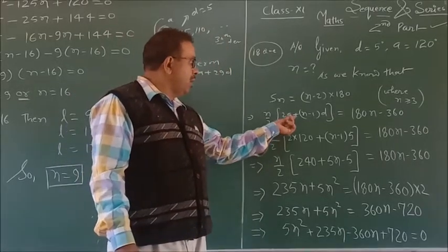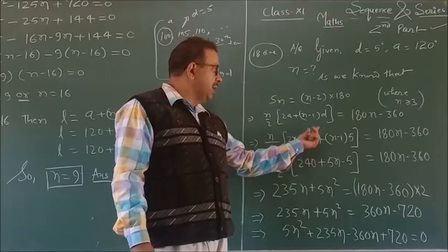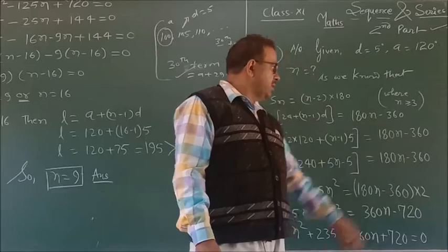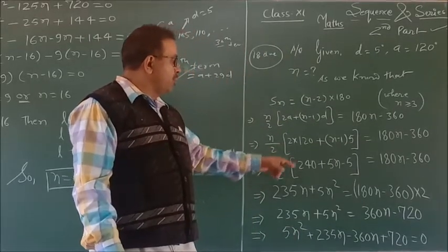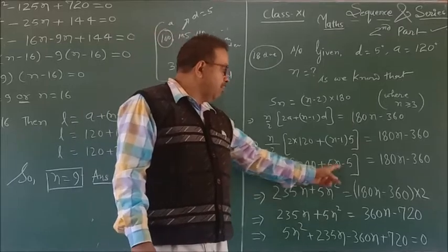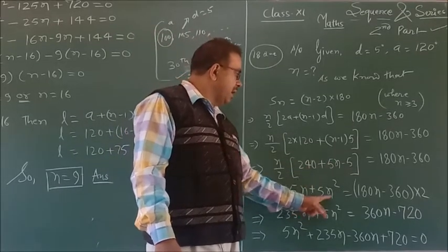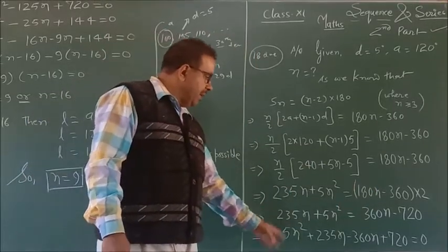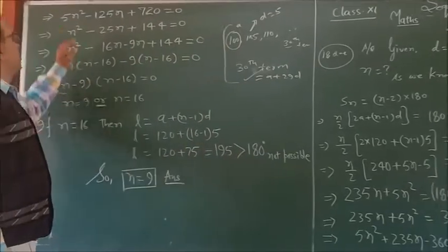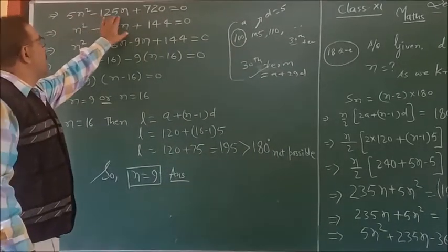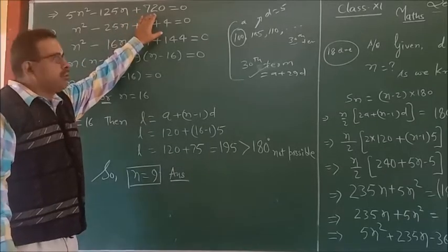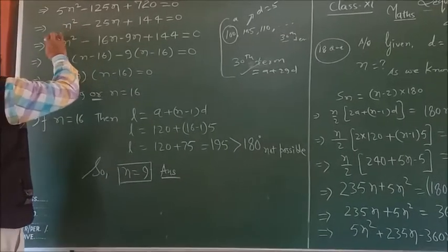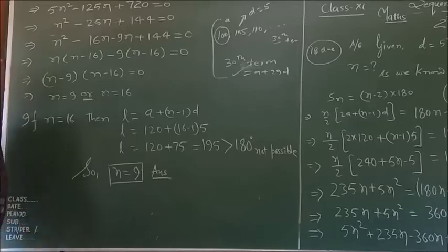After putting the value of a = 120 degrees and d = 5 degrees and setting equal to 180n - 360, then multiplying both sides by 2, we get 240n + 5n(n-1) = 360n - 720. After solving the steps, we get 5n² - 125n + 720 = 0, and after dividing by 5, we get n² - 25n + 144 = 0.